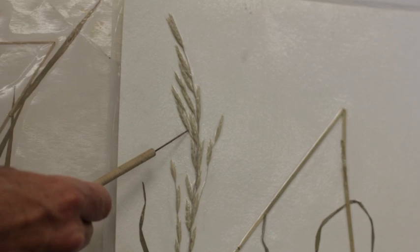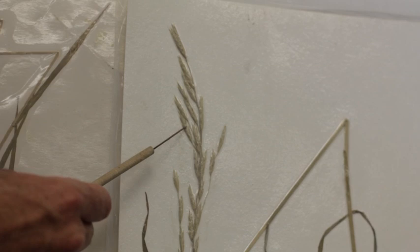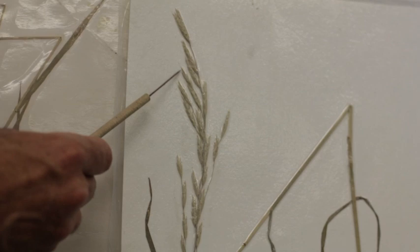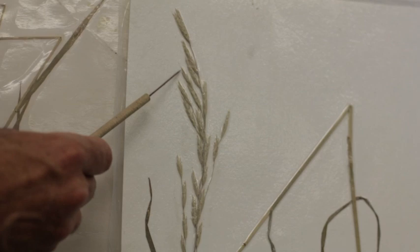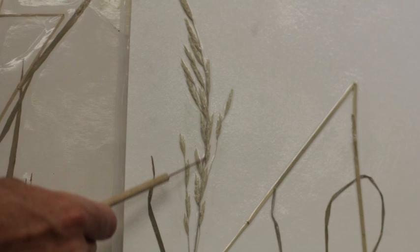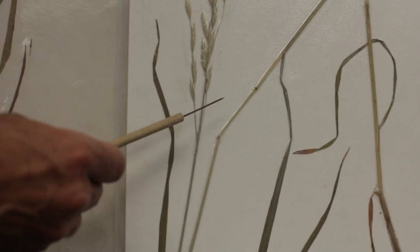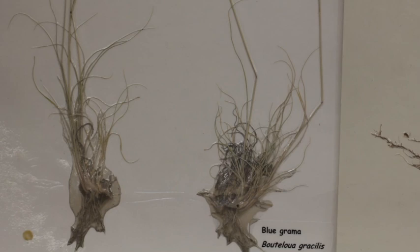This is mountain brome. Mountain brome has much larger inflorescence, in other words more spikelets per floret. Often times they have very small awns in them which smooth brome does not. It's often hairier in the inflorescence. And the number one feature for mountain brome is that it has a hairy base and it has no rhizomes. That's how you distinguish mountain brome from smooth brome.